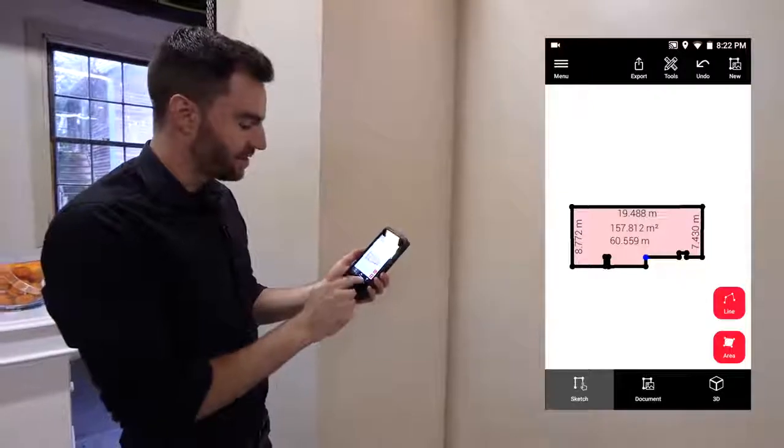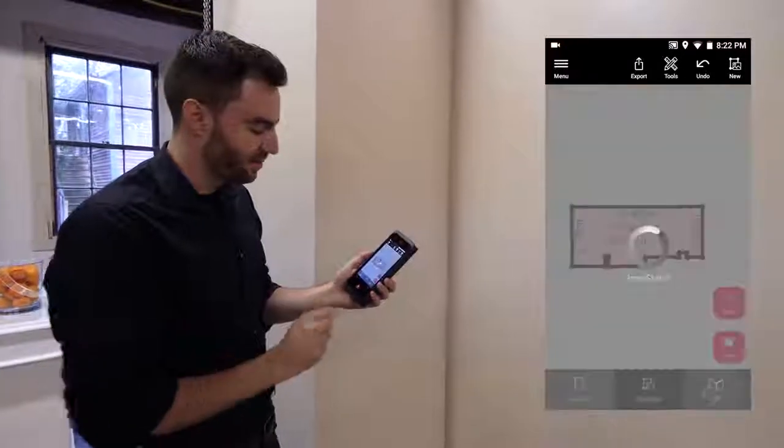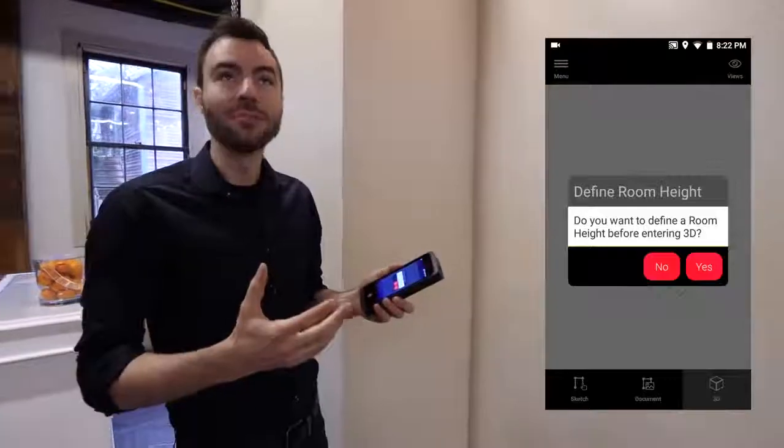And on the bottom, you can see I have a 3D option. If I toggle that, it's going to ask me for a room height.